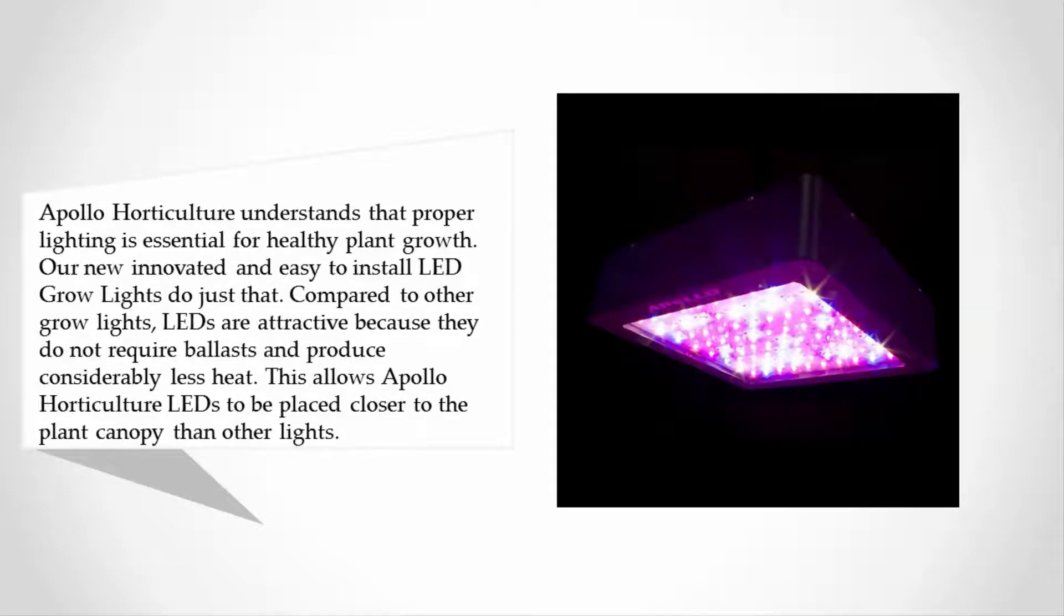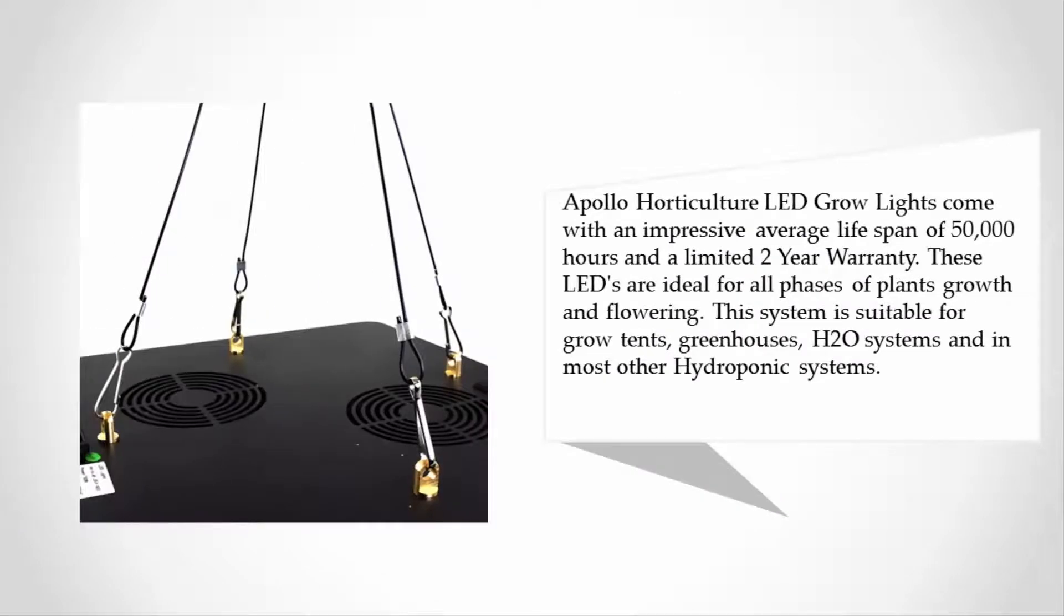This allows Apollo Horticulture LEDs to be placed closer to the plant canopy than other lights. Apollo Horticulture LED grow lights come with an impressive average lifespan of 50,000 hours and a limited two-year warranty. These LEDs are ideal for all phases of plant growth and flowering. This system is suitable for grow tents, greenhouses, H2O systems, and most other hydroponic systems.